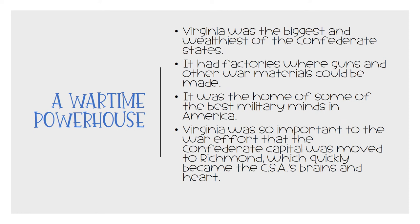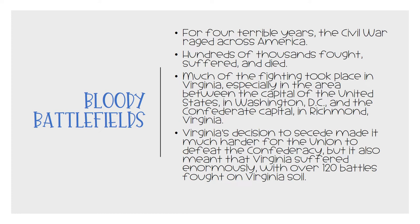Once the war started, Virginia was an absolute powerhouse. It was the biggest and wealthiest of the Confederate states and had factories where guns and other war materials could be made. It was home to some of the best military minds in America. Virginia was so important to the war effort that the Confederate capital was moved to Richmond, which quickly became the Confederate States of America's brains and heart. For four terrible years, the Civil War raged across America. Hundreds of thousands of people fought, suffered, and died. Much of the fighting took place in Virginia, especially in the area between Washington, D.C., and the Confederate capital in Richmond. Virginia's decision to secede meant that Virginia suffered enormously, with over 120 battles fought on Virginia soil.